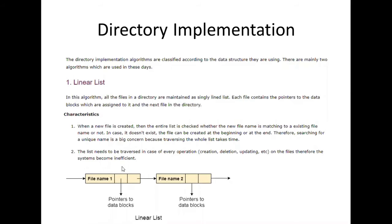The advantage is it is very simple to implement, but the system becomes inefficient. You can write down here the structure of a linear list: file name pointed to data blocks. The file name in this particular block will point to the next file name, so it goes in a linear fashion.